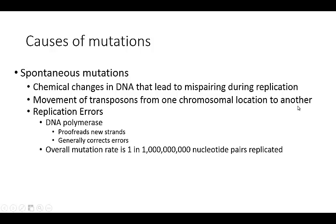There are several different ways that you can get mutations. First of all, you can get spontaneous mutations. These happen through just basic errors — chemical changes in DNA that lead to mispairing during replication. It can also happen through movement of what we call transposons, or mobile elements, which can move from one chromosomal location to another. If those move into a gene or into a regulatory region of a gene, they can disrupt that gene's function.